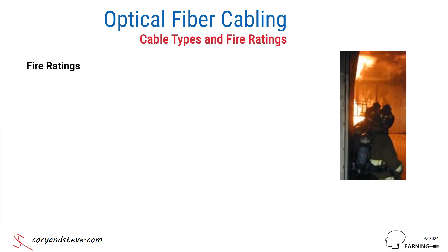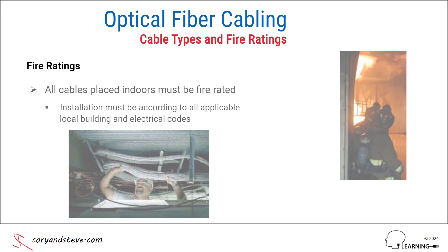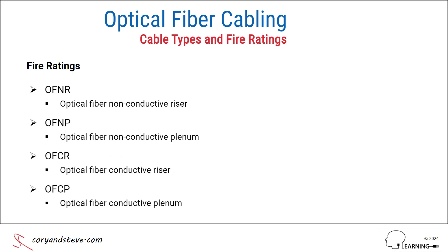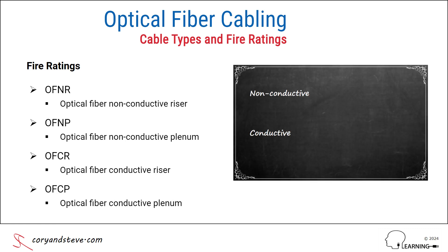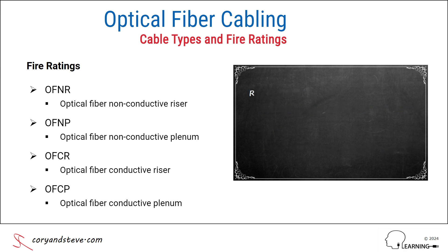Next, we'll summarize the fire ratings for indoor-only and indoor-outdoor fiber cables. In order to help prevent the rapid spread of fire within buildings, all indoor or indoor-outdoor cables, including optical fiber ones, must be fire rated and installed according to all applicable local building and electrical codes. There are four designations for optical fiber cabling: OFNR, OFNP, OFCR, and OFCP. Non-conductive or conductive refers to the absence or presence of any metallic elements in the cable. For example, an armored optical fiber cable or a composite cable containing both fibers and twisted pairs would both be classified as conductive.